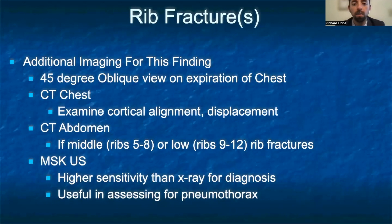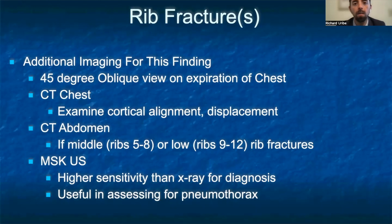It takes a great deal of force to fracture the first and second ribs, given their short length, relative mobility, and protection by other structures in the upper chest. Such fractures can be associated with significant injuries to underlying organs, such as blunt myocardial injury, bronchial tears, or a major vascular injury, best examined with a CT of the chest. In patients with multiple fractured ribs of the middle and lower segments, unexplained hypotension may be the result of intra-abdominal bleeding from the liver or spleen, and a CT of the abdomen would be recommended.